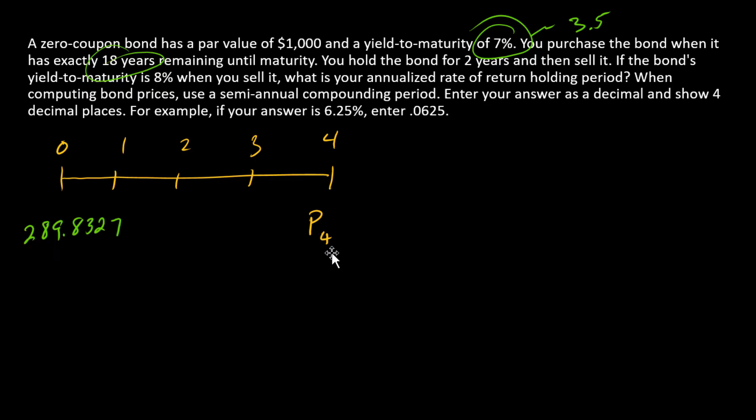Next step is to calculate P4. What's going on four periods down the road? This is when the investor sells the bond. The only payment again that's remaining is the $1,000 par repayment at maturity, and now there are 32 periods remaining.